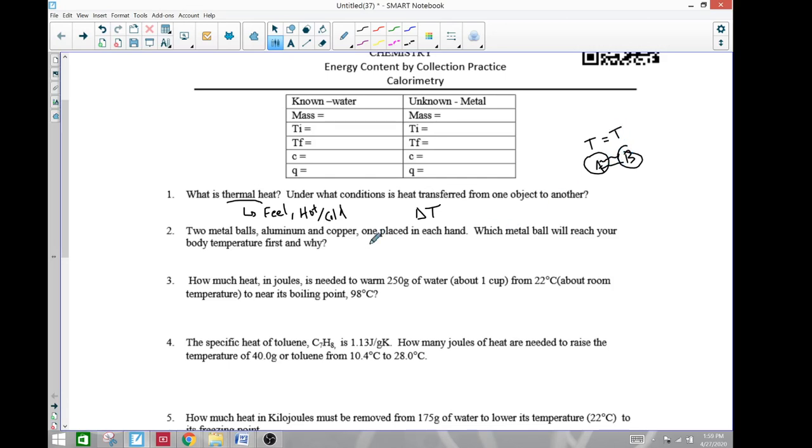Two metal balls, aluminum and copper, are placed in each hand. Which ball will reach body temperature first and why? Well, both assuming you have a hand and you place a ball in it, assuming the energy transfer is the same, really it's just the heat. Copper is 0.36 and aluminum is 0.9. So if they receive the same amount of energy, then this one's going to raise the temperature faster and therefore reach the same temperature as the hand faster. So the answer is aluminum or copper.